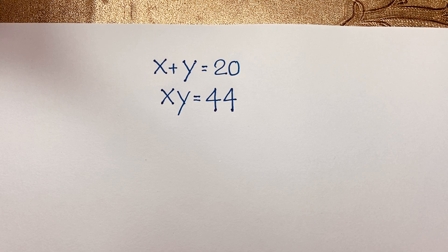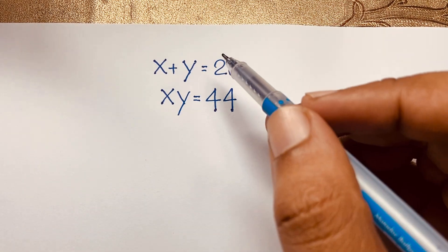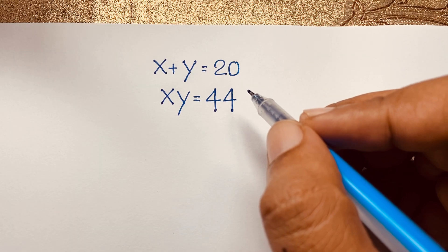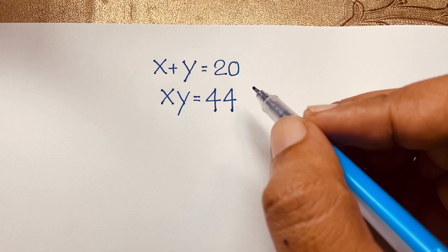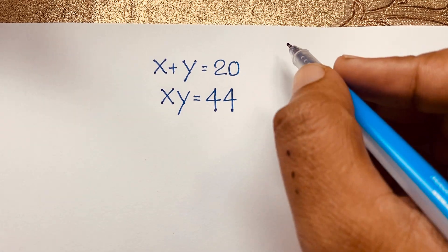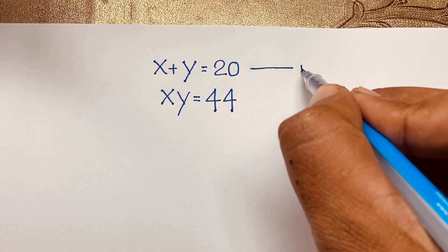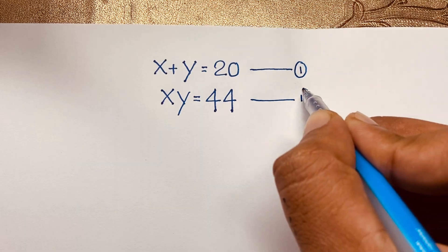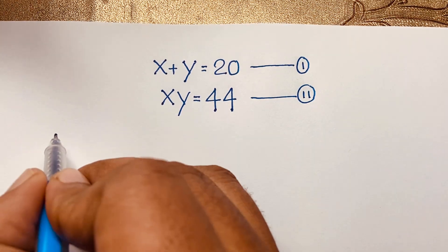Hello everyone, welcome to Russia's Classroom. Today we are solving an interesting German master-level math question: x plus y is equal to 20, x times y is equal to 44. What is x times y? We will solve this interesting math problem using an easy method. This is our first equation and this is our second equation — it is a viral math question.